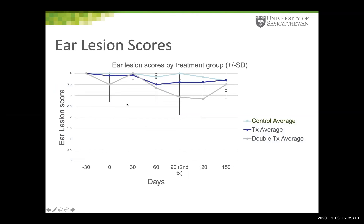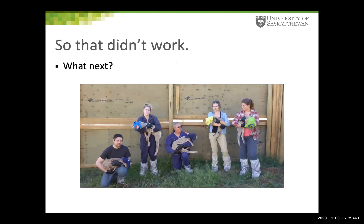Looking at the ear lesion scores over time, some severity seemed to decline slightly, but the long and short of it is that all animals continued to have lots of live mites in their ears. Even animals that improved still had primarily two-to-three out of four ear lesion severity. Since they don't develop immunity to this parasite, they simply become reinfested again. Long Range was considered a failure.